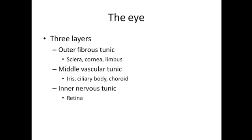Coming to the inside of the eyeball: in cross section, the eye has three main layers. The outer fibrous tunic is composed of the opaque sclera and the transparent cornea at the anterior surface. The middle vascular tunic includes the iris, ciliary body, and choroid. The inner layer is the nervous tunic, which is the retina.